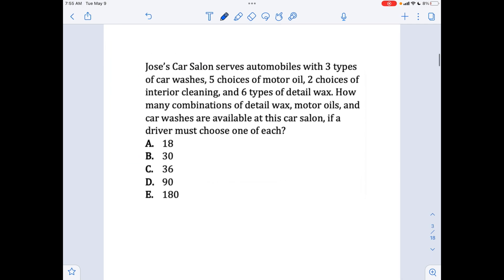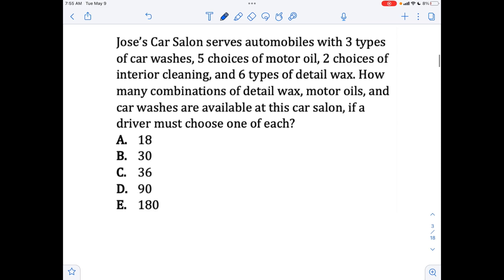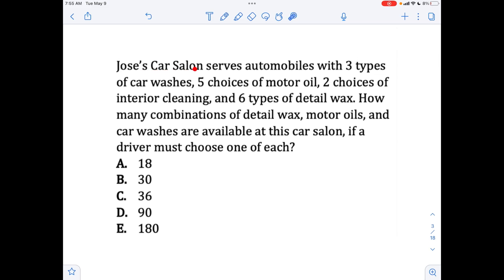All right, next problem type is about combinations. This person's car salon serves automobile types with three types of car washes, five choices of motor oil, two choices of interior cleaning and six types of detail wax. How many combinations of detail wax, motor oils and car washes are available if the driver must choose one of each? If you're given a variety of options and you have to choose one of each, all you do is you just multiply all the numbers together. So in this case, you get 15 times 12, that gives you this number right here. Pretty straightforward. This is one of the easier problem types you'll get.